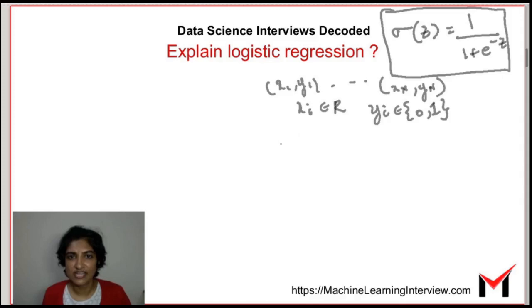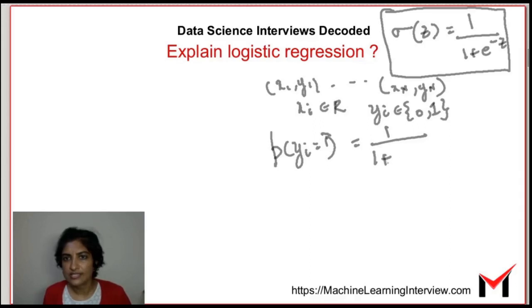Now logistic regression defines probability of yi equals 1 equals 1 by 1 plus e power minus w1 xi plus w2. This is again the logistic function that we just talked about or the sigmoid function and what you see here is a linear combination of the features.